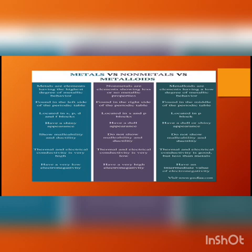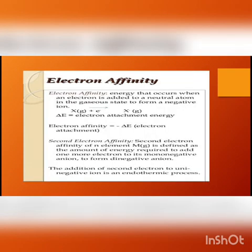Now we will study some trends. Electron affinity is the tendency of an atom to gain electrons in its outermost shell. It is defined as: when an electron is added to a neutral atom in the gaseous state to form a negative ion. So the tendency of an atom to gain an electron and acquire a negative charge is called electron affinity.